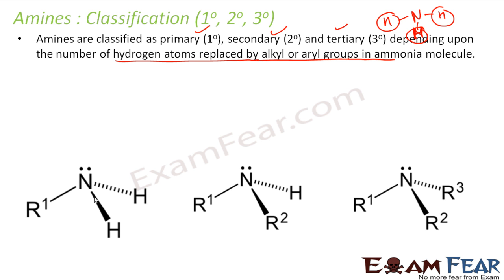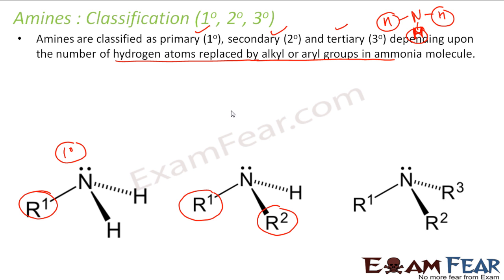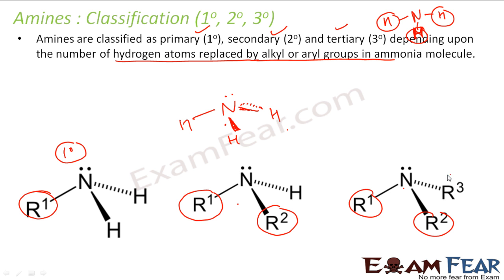Looking at the structures: if you compare a compound with ammonia and only one hydrogen has been replaced, this is a primary amine. If two hydrogens are replaced, this is a secondary amine. If all three hydrogens are replaced when you compare the structure with ammonia, this is a tertiary amine.